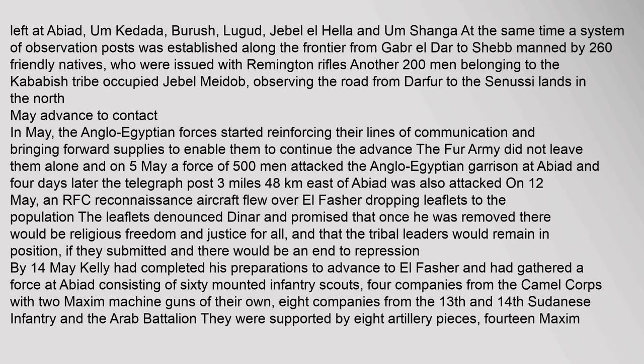Large detachments were left at Abiyad, Umm Kedda, Barouche, Ligud, Jebel El Hela and Umm Shanga. At the same time a system of observation posts was established along the frontier from Gabr Eldar to Sheb, manned by 260 friendly natives who were issued with Remington rifles. Another 200 men belonging to the Kebabish tribe occupied Jebel Maidab, observing the road from Darfur to the Senussi lands in the north.